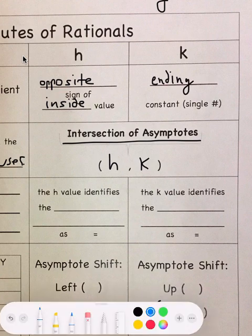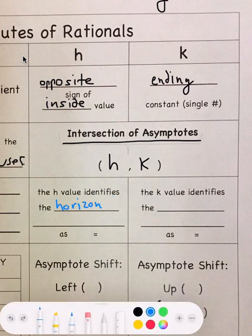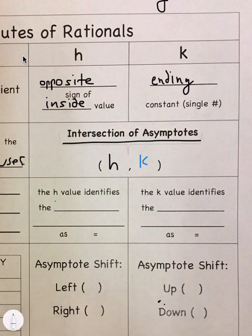So the h value, this identifies... or actually, excuse me, it identifies the vertical asymptote. Let me step back from that. So this is where it's different. It identifies the vertical asymptote.